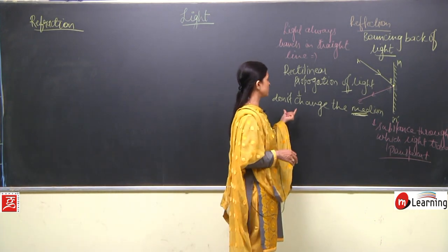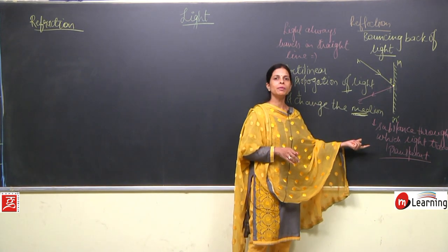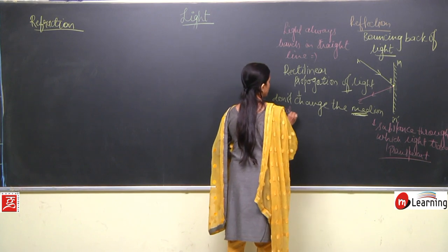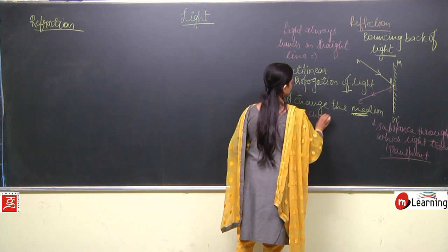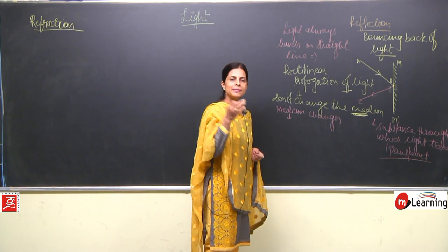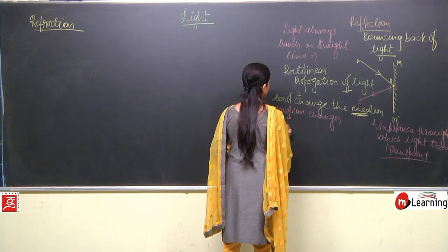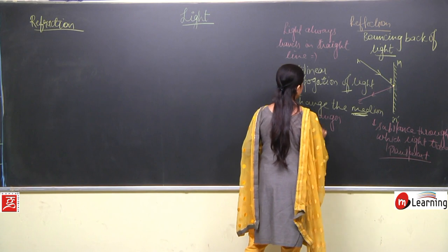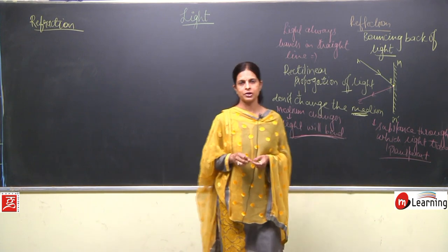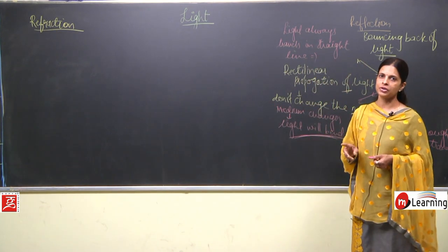Coming back to this point: light travels in a straight line if the medium is not changed. But what happens when the medium changes? When the medium changes — that means when the substance through which light is passing changes — in this case the light will bend, and this bending of light is known as refraction.